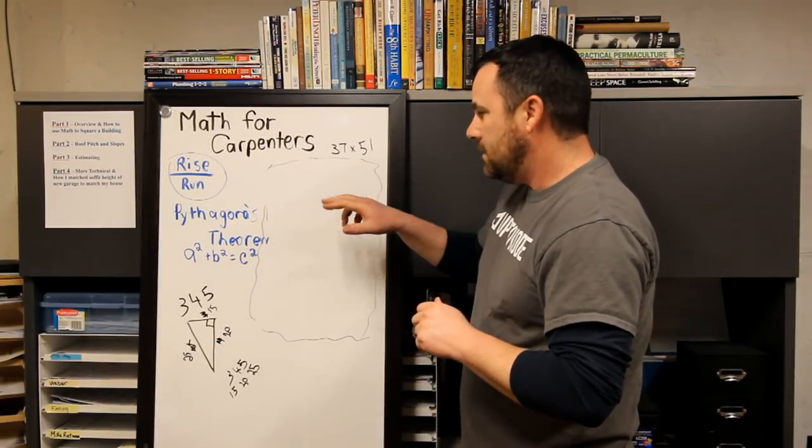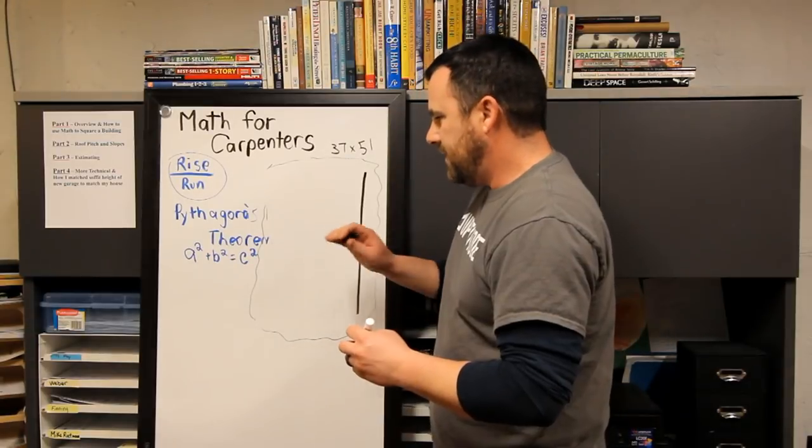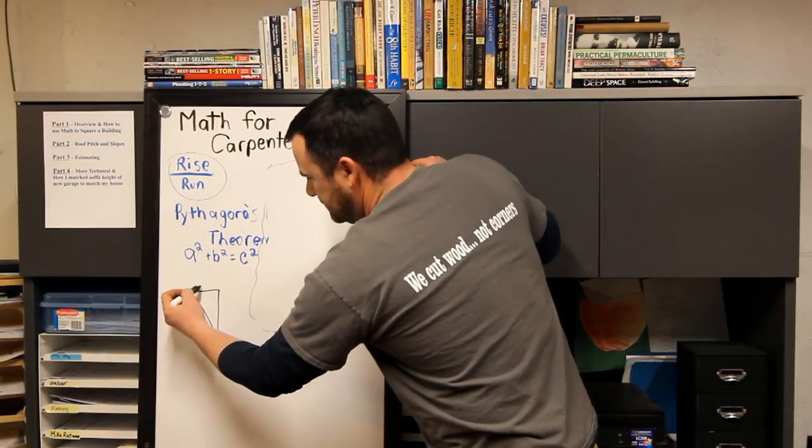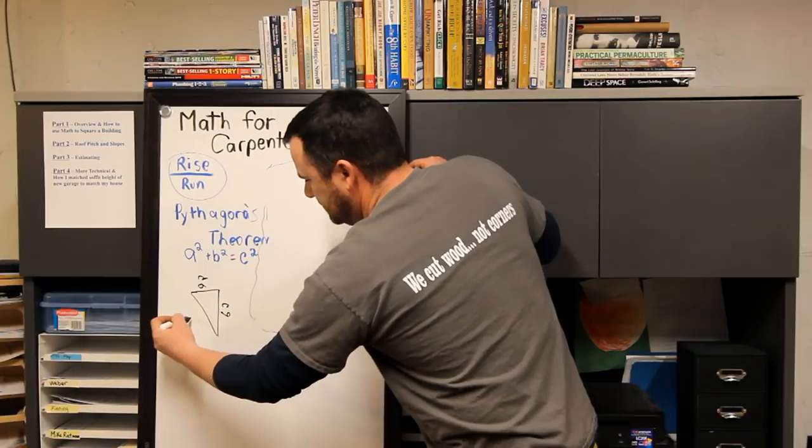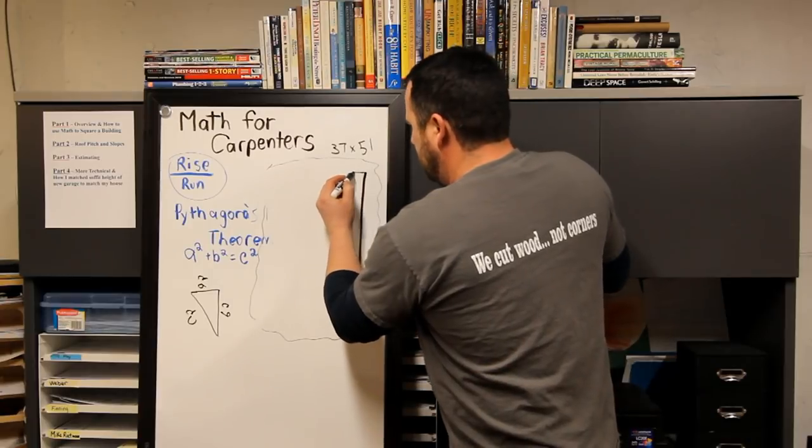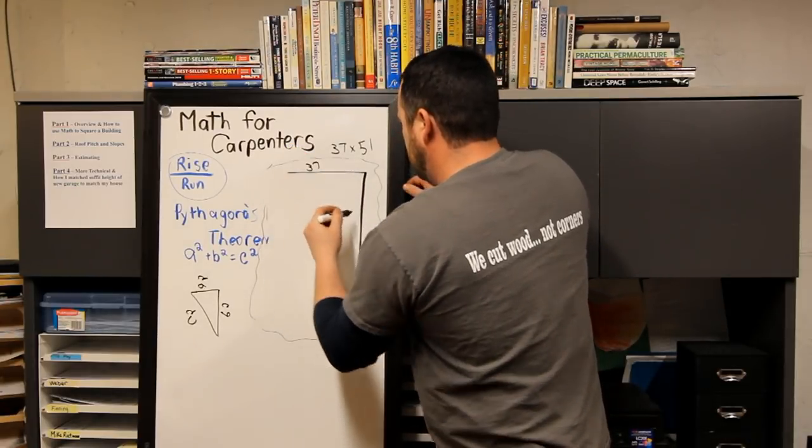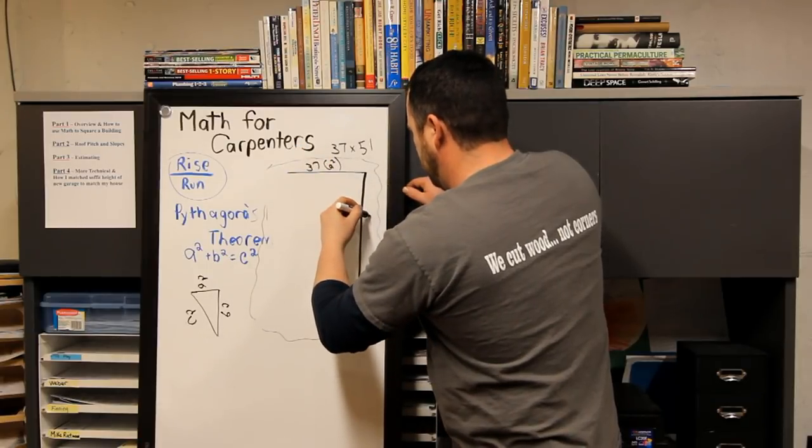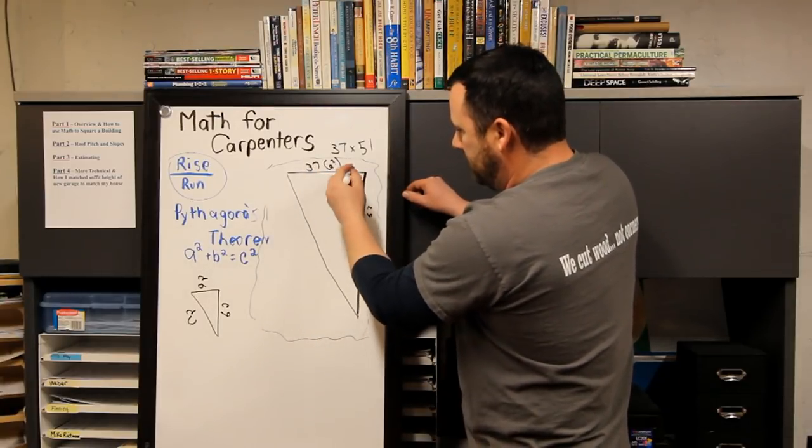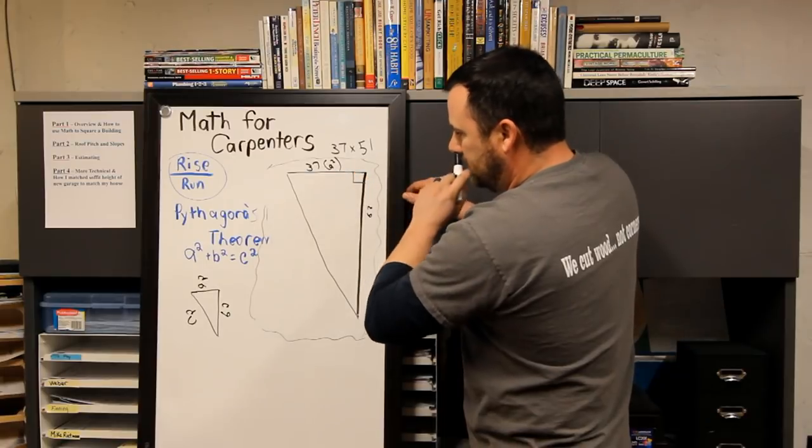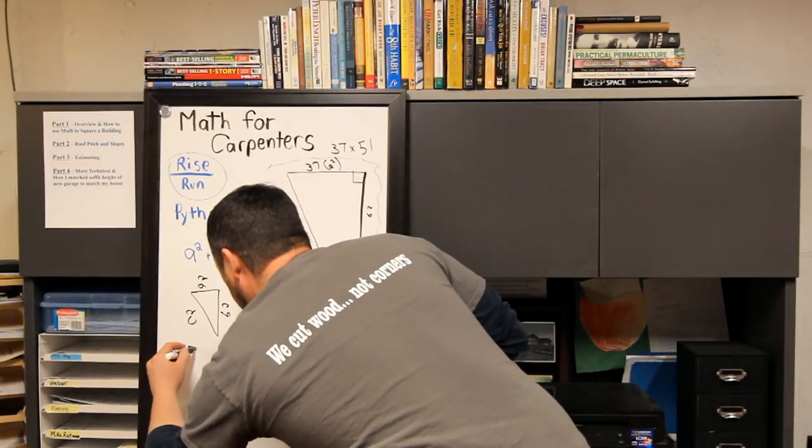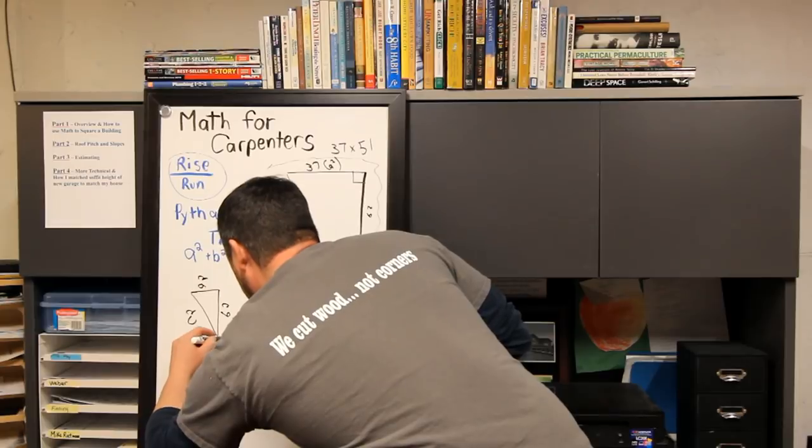Let's use a little Pythagorean theorem. You notice how I had to write it down beforehand because I don't know how to spell it. Pythagorean theorem is just basically a² + b² = c². So a² is 37 feet, this is a², b², and you're just making a right triangle so you have a square corner and everything is built from there. This will be c². So 37² + 51² = c².